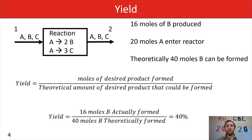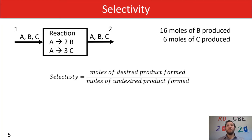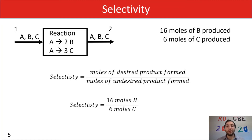There's another term we've started talking about, which is selectivity. Selectivity talks about the preference for one product being formed over another. In an ideal world, you'd want a high selectivity. Selectivity is equal to the moles of your desired product being formed divided by your moles of undesired product formed. In this example, we have 16 moles of B being produced — our desired product — and 6 moles of C — our undesired product. So selectivity equals 16 moles of B divided by 6 moles of C, giving us a selectivity of 5.33, which is pretty good. Anything above 1 is good; the higher that number, the better.